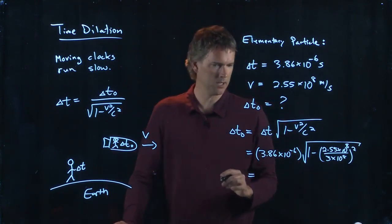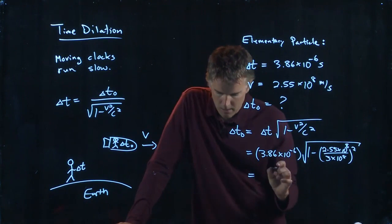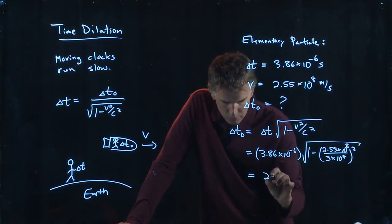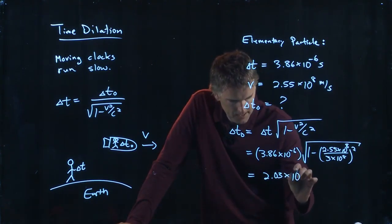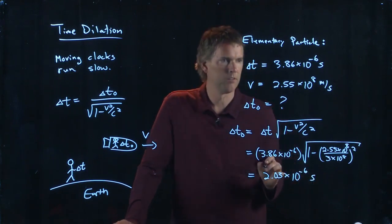Now if you punch that into your calculator, you can double check with my numbers. I got 2.03 times 10 to the minus 6 seconds.